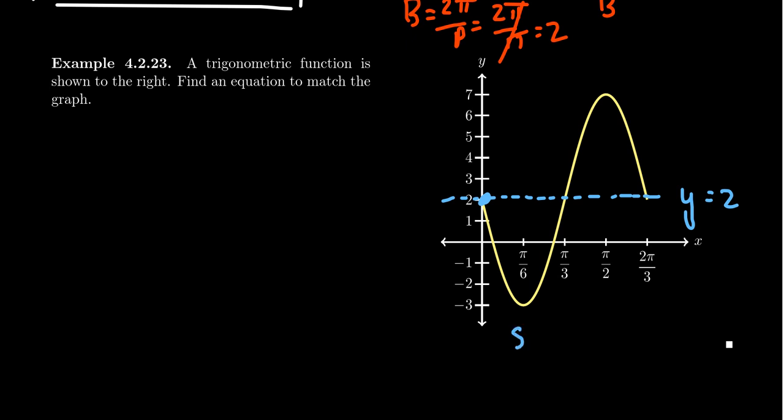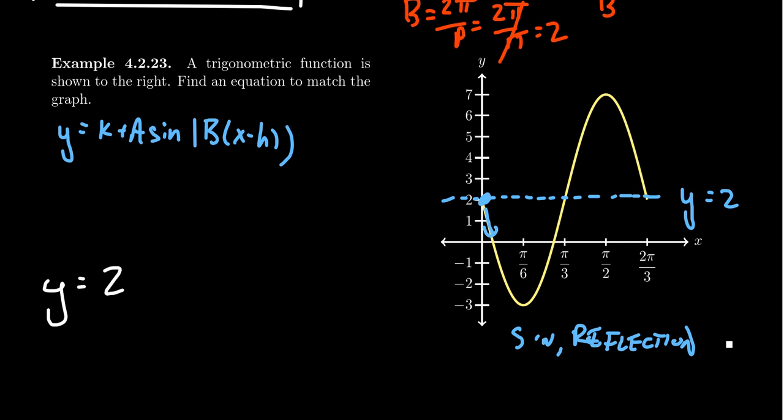If you start on the midline with respect to the y-axis, that's going to be a sine. But this time we're decreasing, so this one is going to be a sine with a reflection. So our basic model we're working with here is again going to be sine. We get y equals k plus a sine of b times x minus h. The shift we've already identified because that's the location of the midline, so we get y equals 2 plus.